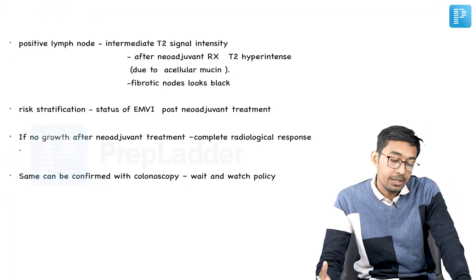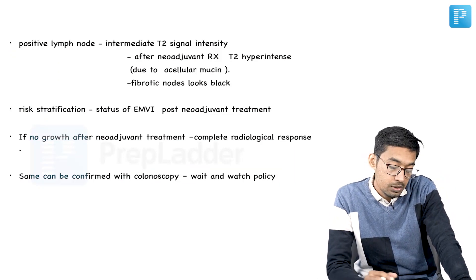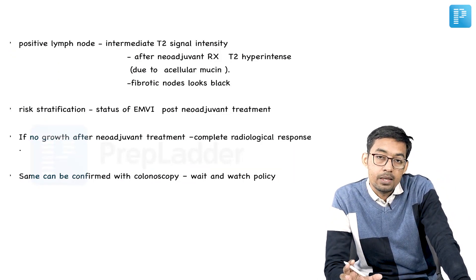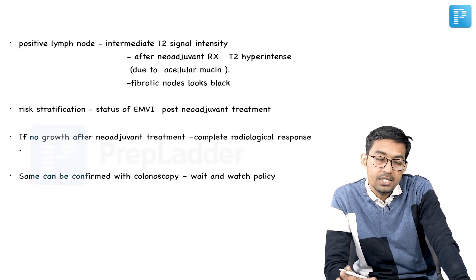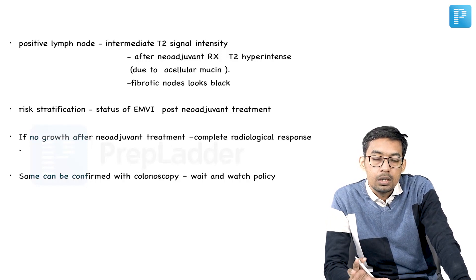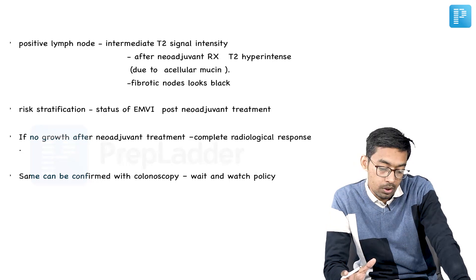Another method to evaluate response is positive lymph nodes. Initially, if there is an irregular border and intermediate signal in the lymph node, they are called positive lymph nodes.